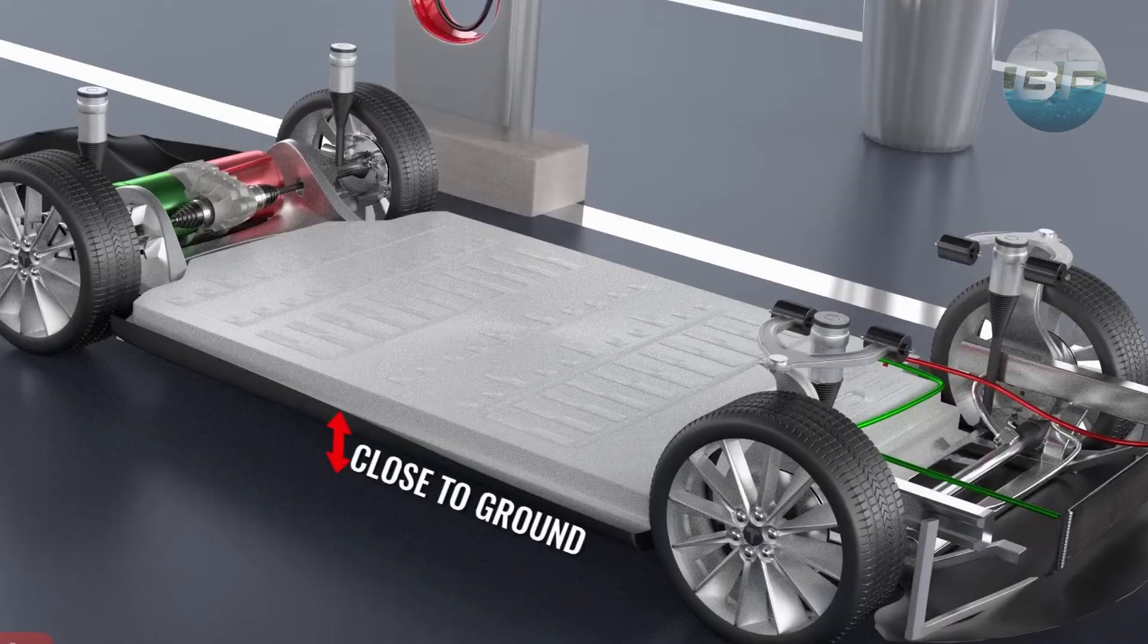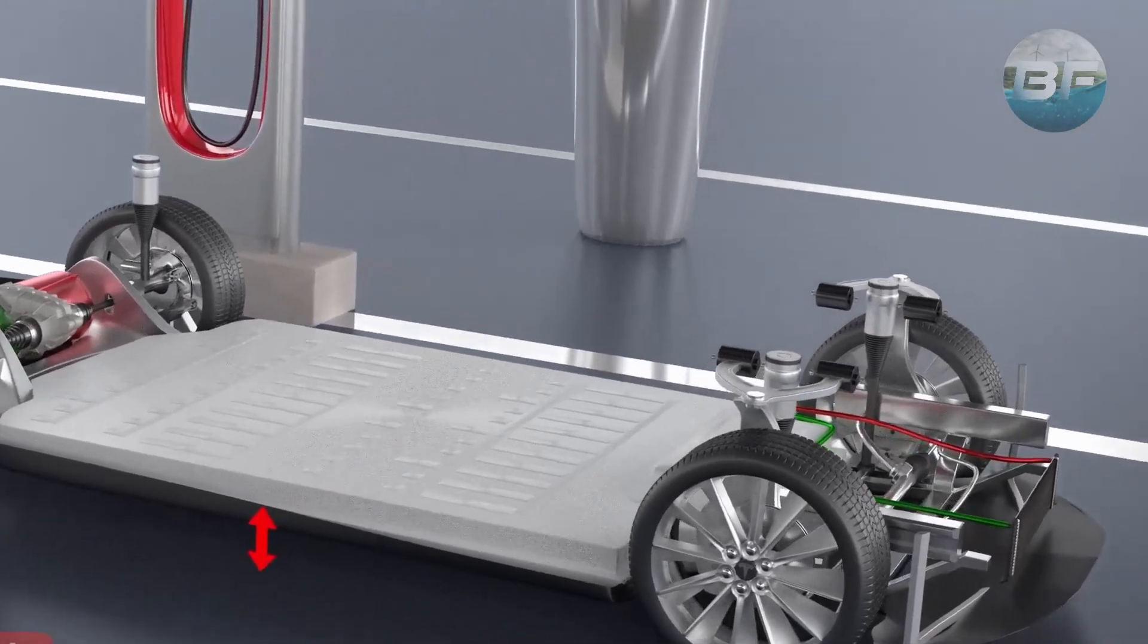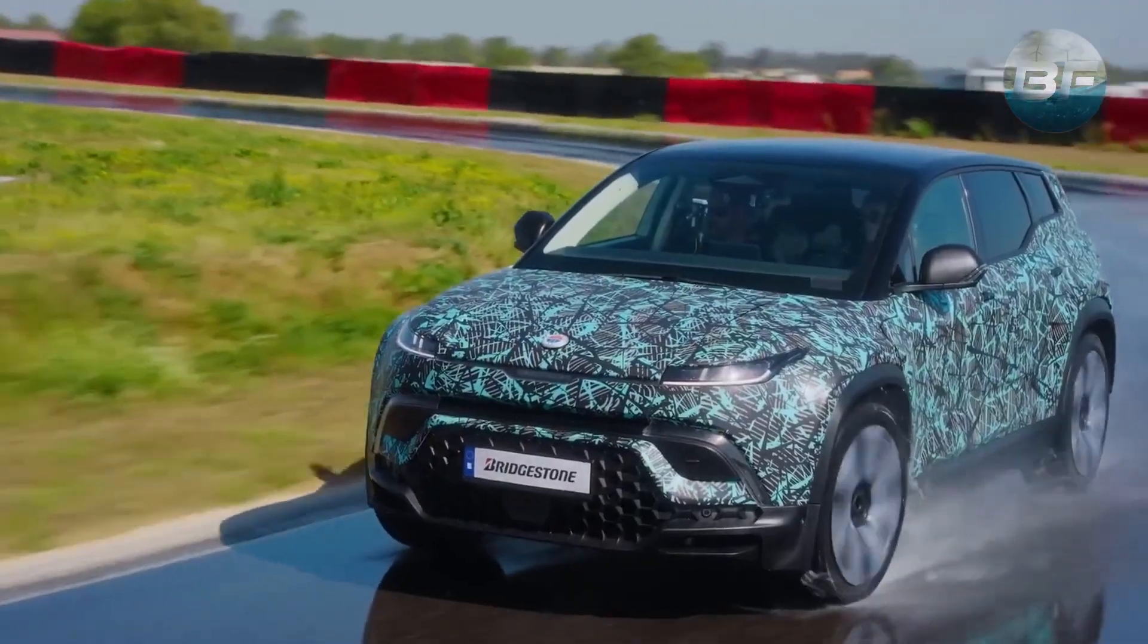The battery pack is usually located in the floor of the vehicle, which helps to lower the center of gravity and improve stability.